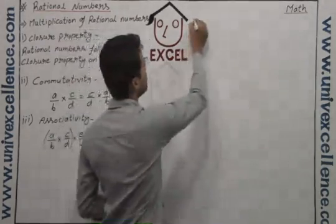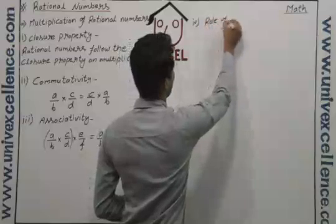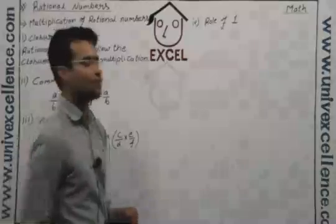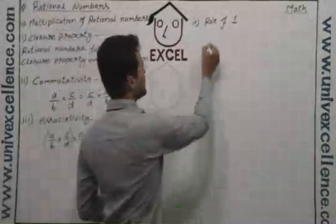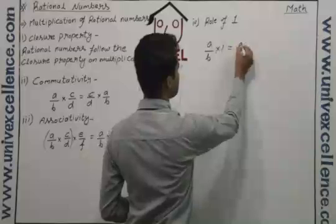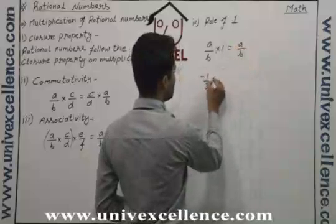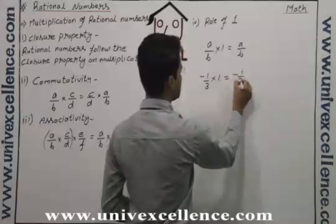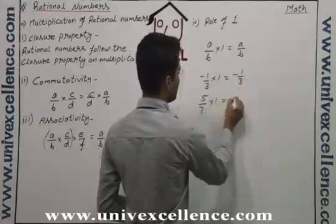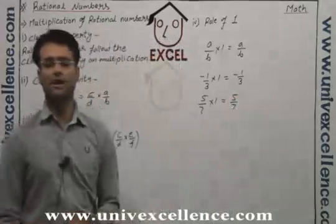If we talk about the role of 1, so whenever we multiply a rational number by 1, we get the rational number again. So like minus 1 by 3 multiplied by 1, we get minus 1 by 3. And 5 by 7 multiplied by 1, we get again 5 by 7.